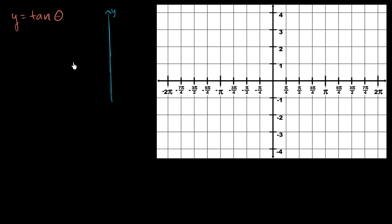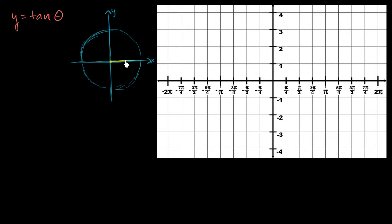So let's say that's a y-axis and this is my x-axis. The unit circle would look something like this. This is all a refresher of the unit circle definition of trig functions: if I have an angle theta where one side is the positive x-axis and the other side forms the angle, where this ray intersects the unit circle, the x-coordinate is the cosine of theta and the y-coordinate is the sine of theta.